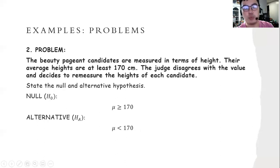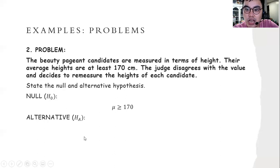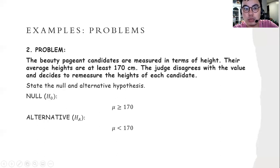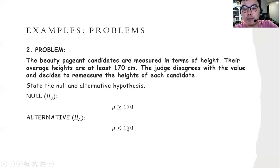The alternative hypothesis states that the mean is less than 170. The type of this alternative hypothesis is directional; we use the term 'less than' or 'greater than.' We use the one-tailed test for this kind of alternative hypothesis because there is a specific comparison.